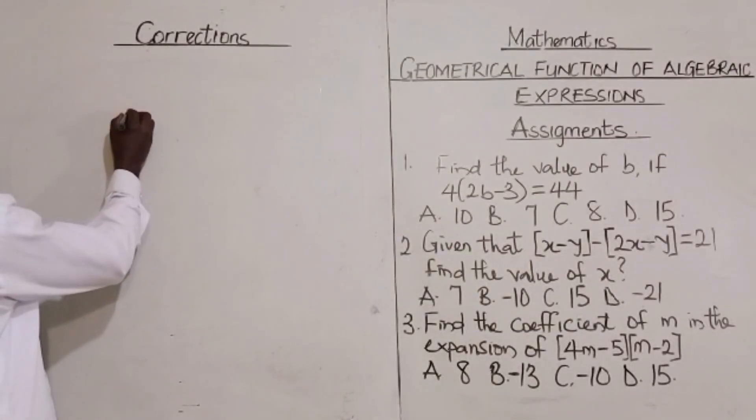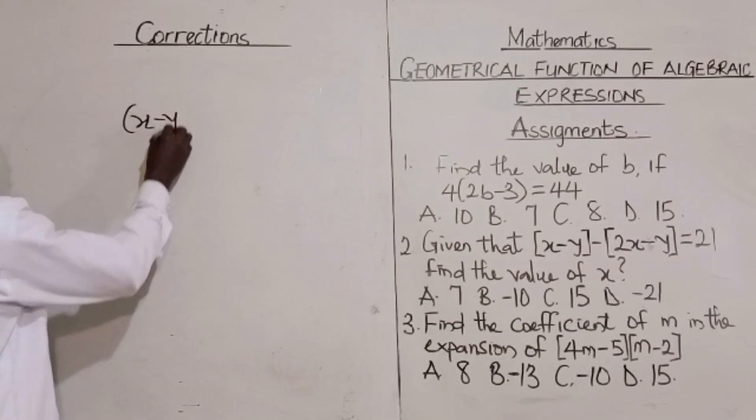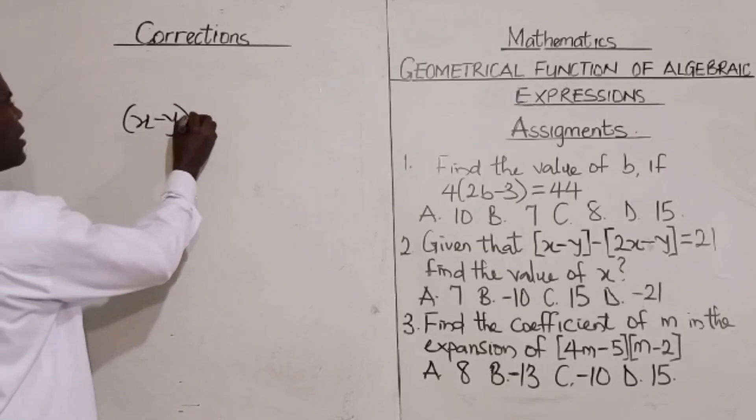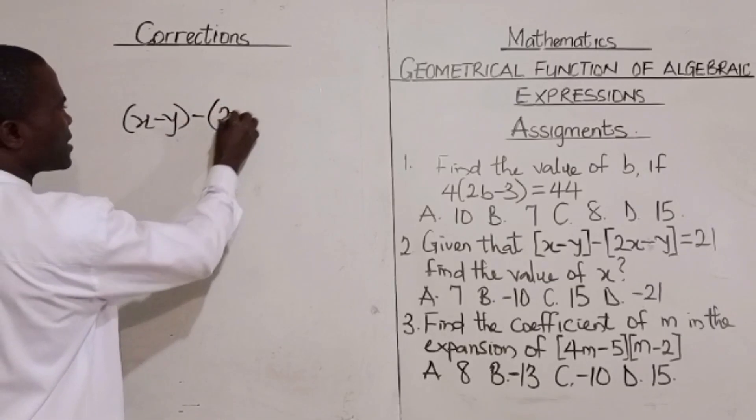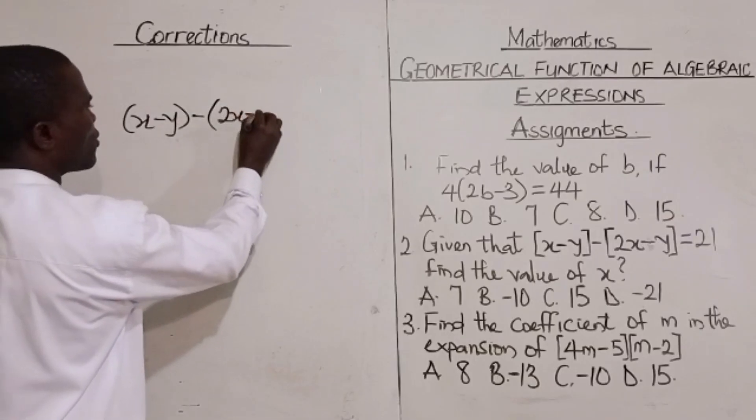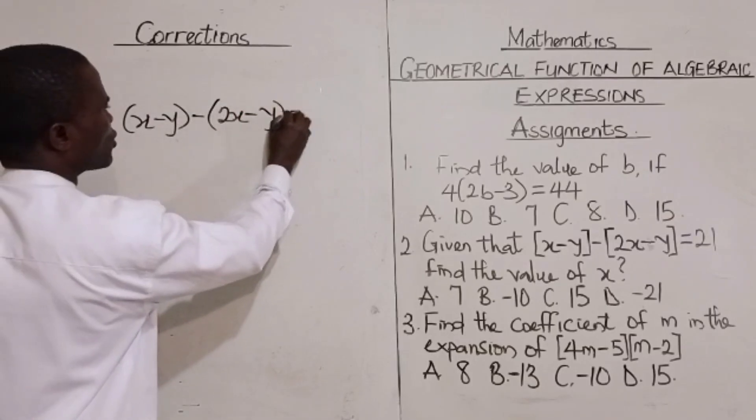Let's proceed to assignment 2. Given that here is bracket open 6 plus x, bracket open x minus y, then we have minus bracket open again, 2x minus y is equal to 21.